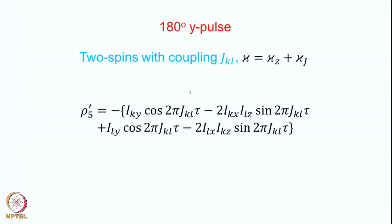Now let us consider the next case where you have two spins with coupling J_KL. The Hamiltonian is now Hz plus Hj. We have seen before that the chemical shift is completely refocused at time point 5. Therefore, we need not calculate the chemical shift evolution once more, because you remember: evolution under Hz and Hj can be calculated independently — it does not matter which one we calculate first and which one second.